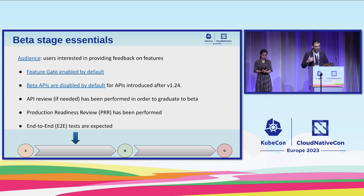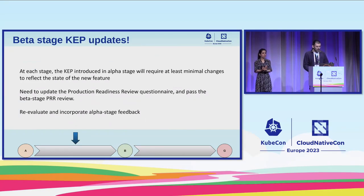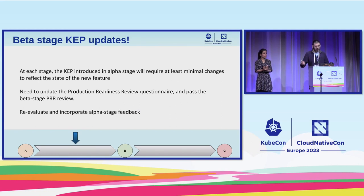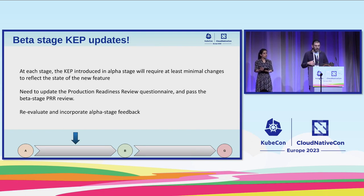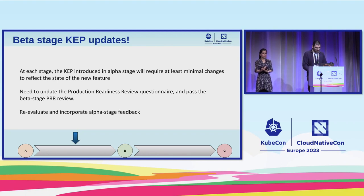When we go beta, we really need to have some coverage from end-to-end tests to make sure the behavior we are introducing or changing is tested and doesn't break in subsequent releases. At each stage on which we move forward our feature, we need to make changes to the KEP, which documents the state of a feature, and make sure that state is updated. At the very least, we need to change the latest version we work on with the feature, and address a bunch of questions regarding production readiness and robustness. We also encourage re-evaluating the KEP, making fixes and addressing the feedback gathered so far.